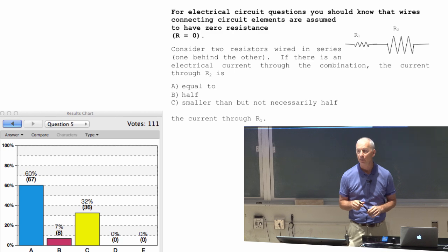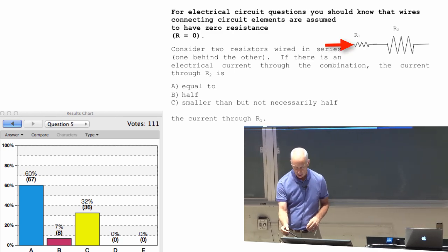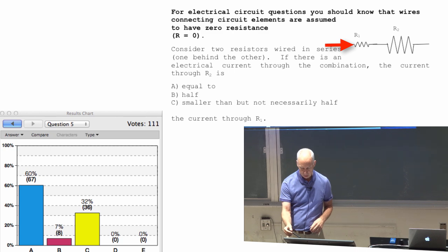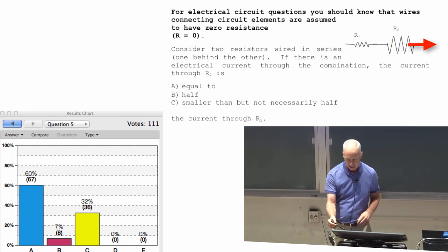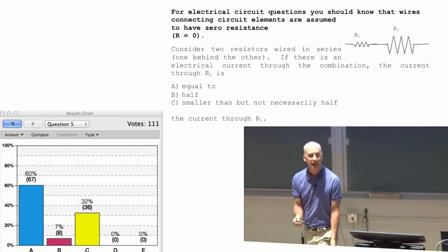It could be zero current through both, but if there's a current of one amp through this one, in other words, one coulomb per second ends up right here, that means one coulomb per second has to end up right there. It can't collect in the center, there's no place to put it.